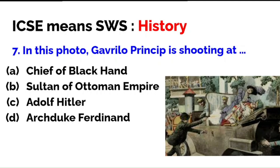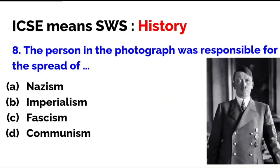As I said in my video, you should remember all the different aspects of the immediate cause of the First World War. The person in the photograph was responsible for the spread of Nazism, imperialism, fascism, and communism. First you need to know who this gentleman is — this person is Adolf Hitler — and he was responsible for the spread of Nazism.